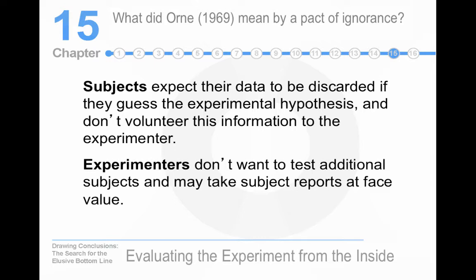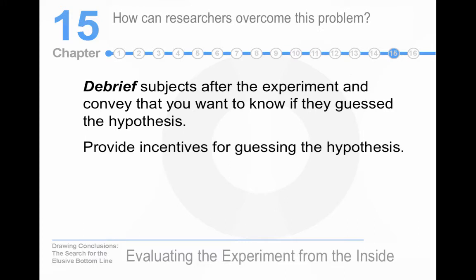If we really threw out the data of people who had ascertained the experimental hypothesis, we'd have to toss out about 90% of our undergraduate research, because in a lot of student research you can see the independent variable coming like a Mack truck — it's obvious what they're manipulating. How do researchers overcome this problem? Well, they debrief people and ask them if they guessed the hypothesis and provide incentives for guessing. I can tell you, in all honesty, I know of no one who does this or who has ever done that.